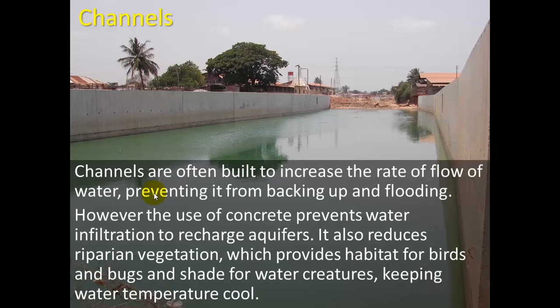We also make channels — we take a river or waterway and pave it with concrete, which increases the rate of flow of water, preventing it from backing up and flooding. However, the use of concrete prevents water infiltration to recharge aquifers. It also reduces riparian vegetation, which provides habitat for birds and bugs and shade for water creatures keeping water temperature cool, meaning the water ends up getting too hot.